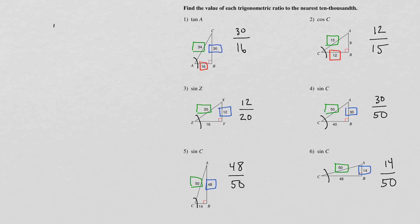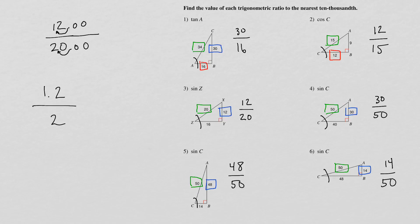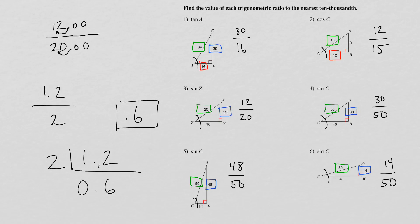Number three is 12 over 20. We don't need to use on-the-flag division. We can move these decimals over once, so now we have 1.2 divided by 2. 2 goes into 1 zero times with 1 left over; 2 goes into 12 six times. So our answer is 0.6. That was for number three — sine of Z equals 0.6.